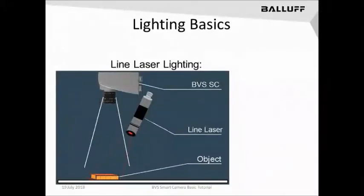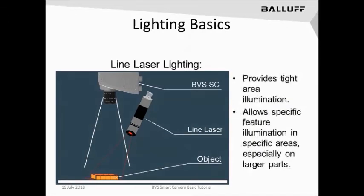Line laser lighting takes advantage of the linear light source produced by a laser, typically in the red spectrum. This type of laser lighting can project a pattern — in this case, a crosshatch pattern — against the surface of an object to produce highly sharp contrasted areas, specifically at the edges of the object. It can also be used to detect variation in the height of an object. This technique is very specialized and can be manipulated in many ways, and while experimentation is key, the results can be very surprising.